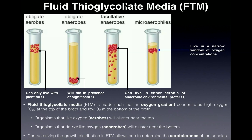We have a test tube where our FTM media is. Towards the top of the media, there are high oxygen levels, and the bottom of the media has low oxygen levels. So we basically create an oxygen gradient — as we go towards the top of the tube, the oxygen level increases.